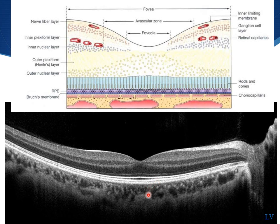Below that is your choroid. The choroid itself can become thicker secondary to conditions such as central serous chorioretinopathy, polypoidal choroidal vasculopathy, or macular degeneration. The choroid can also become thinner over time secondary to atrophy, such as in macular degeneration. Enhanced depth imaging has allowed us to better visualize the choroidal structures.